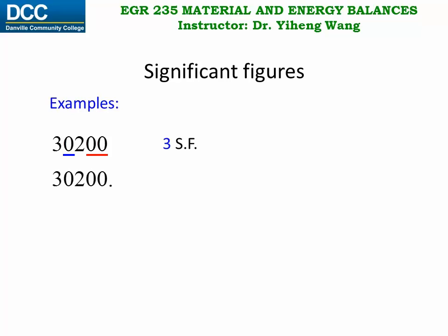But if I add a decimal point to this number, it might seem that I did not change the value of this number, but I did change the level of accuracy. So now all five figures are all significant figures. And if I add another 0, then this number now has six significant figures.